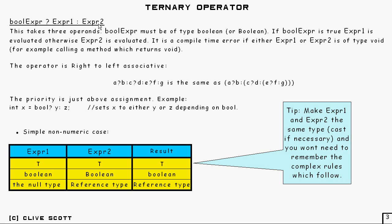And it's a compile time error if either expression one or expression two is of type void. And it could be of type void, for example, if you were calling a method which returns void. That would be an example of an expression which was of type void. And if it's of type void, as I say, it's a compiler error. So you can't do it.